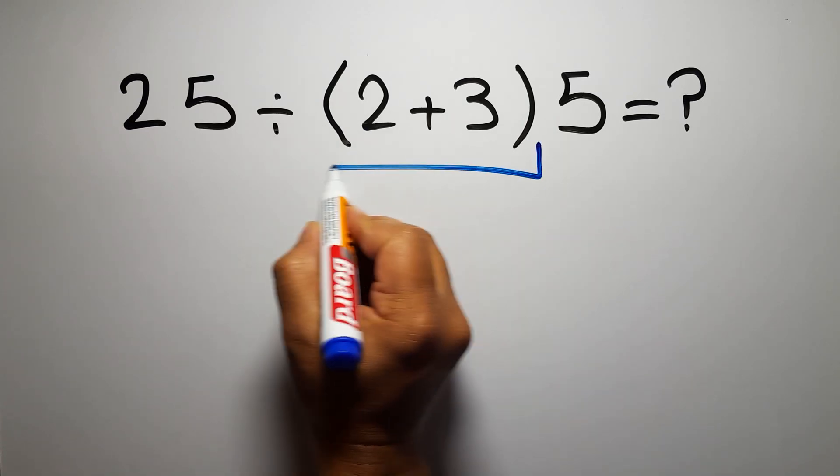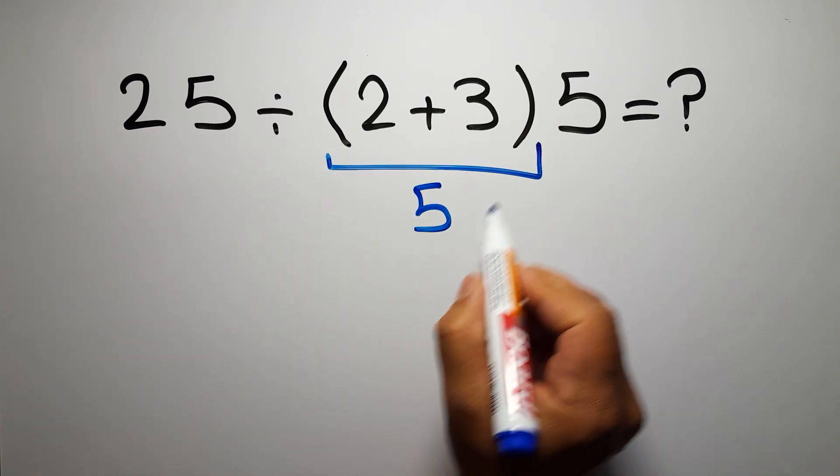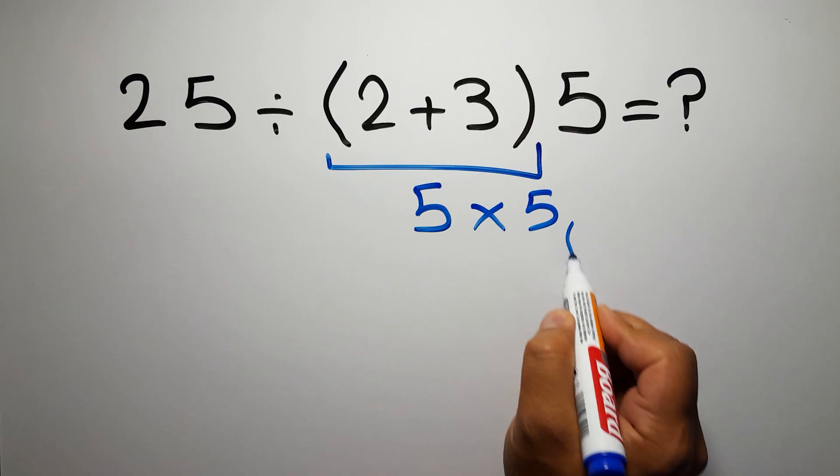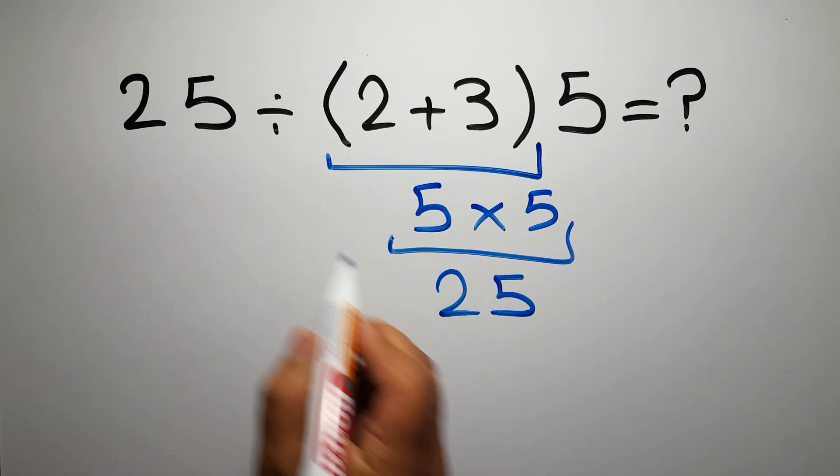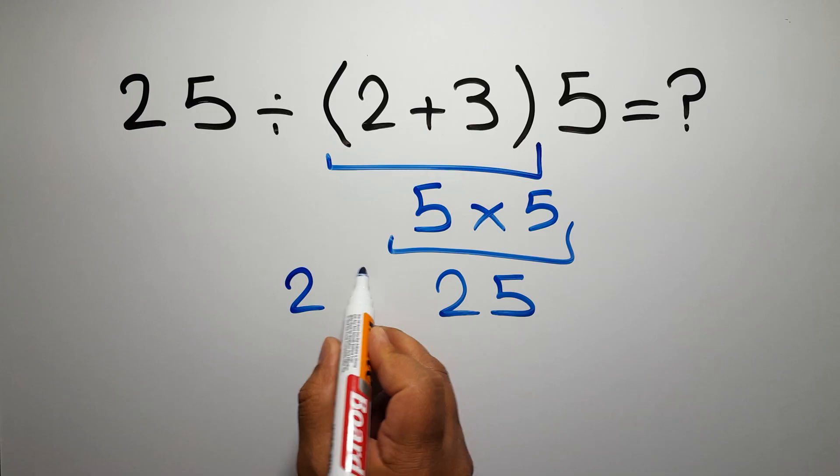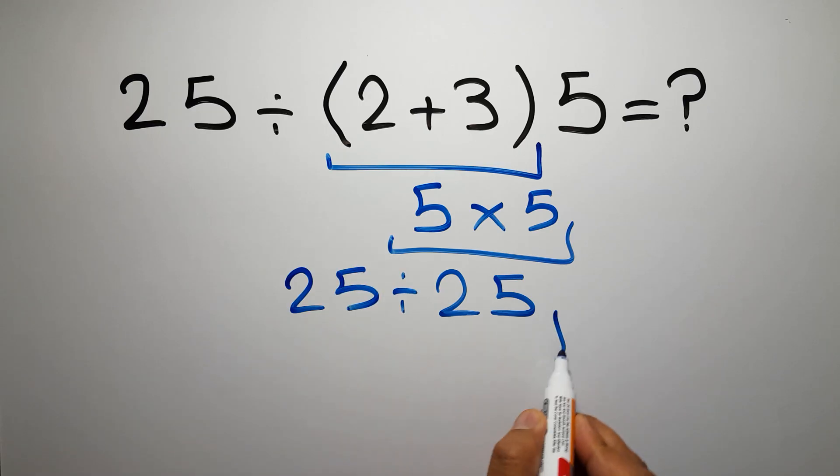2 plus 3 gives us 5, and 5 times 5 equals 25, so 25 divided by this, 25 divided by 25 equals 1, but this answer is not correct,